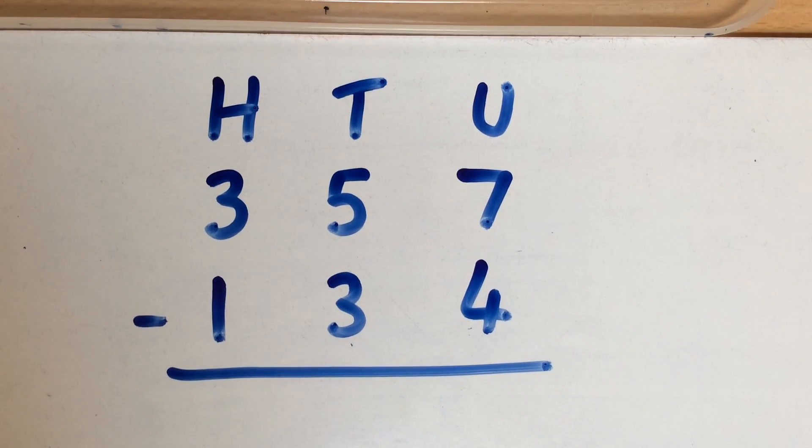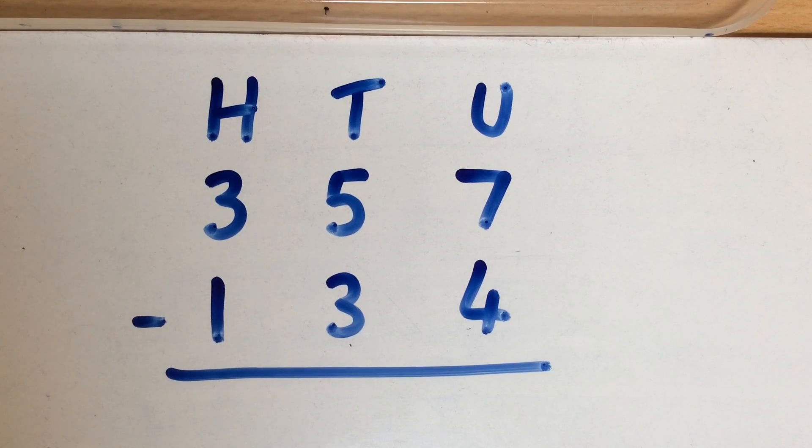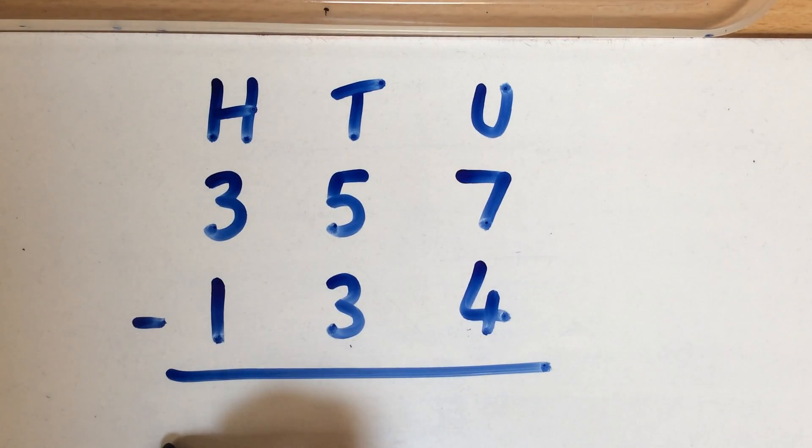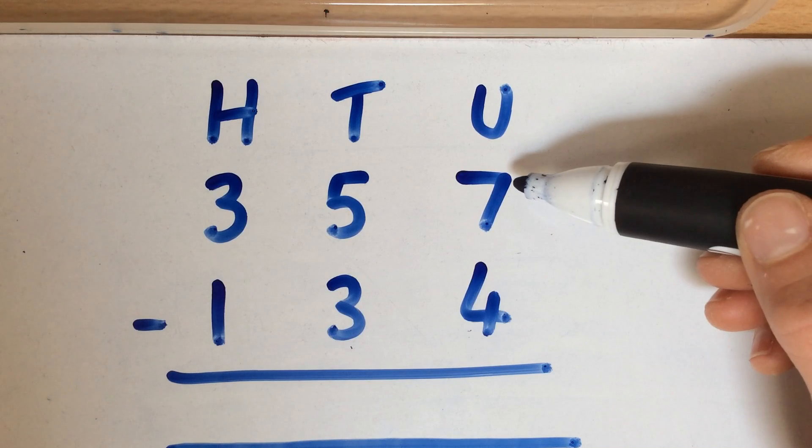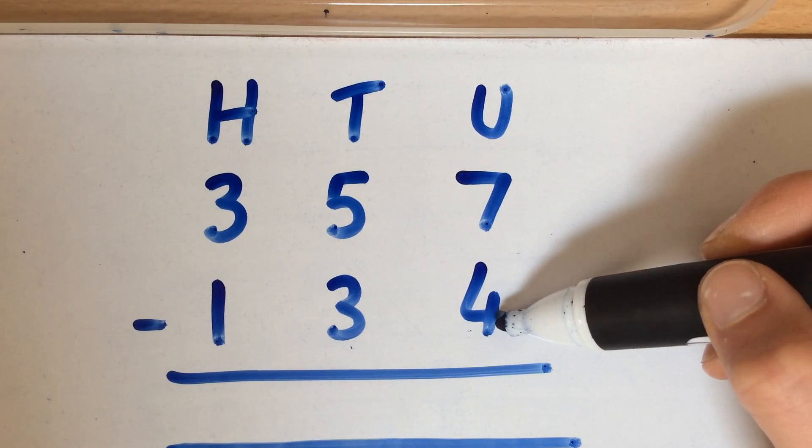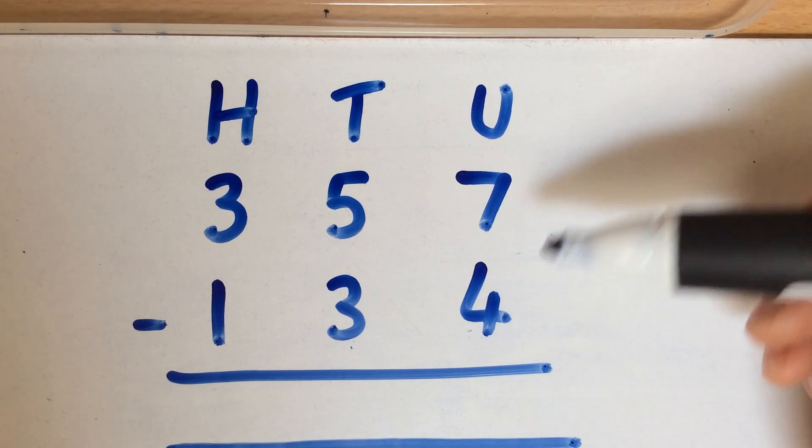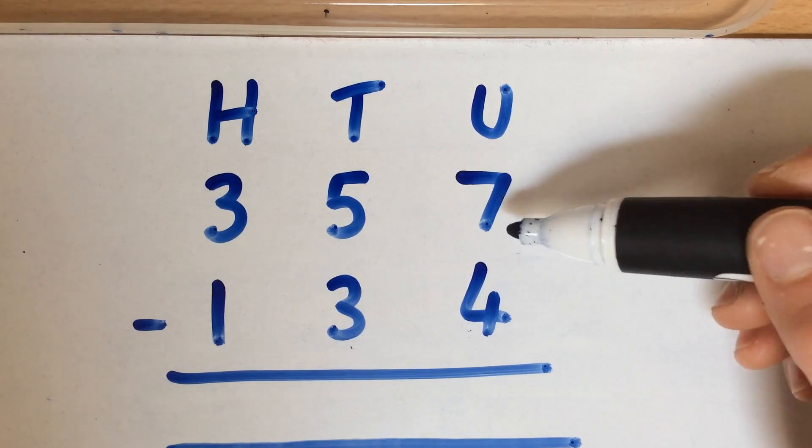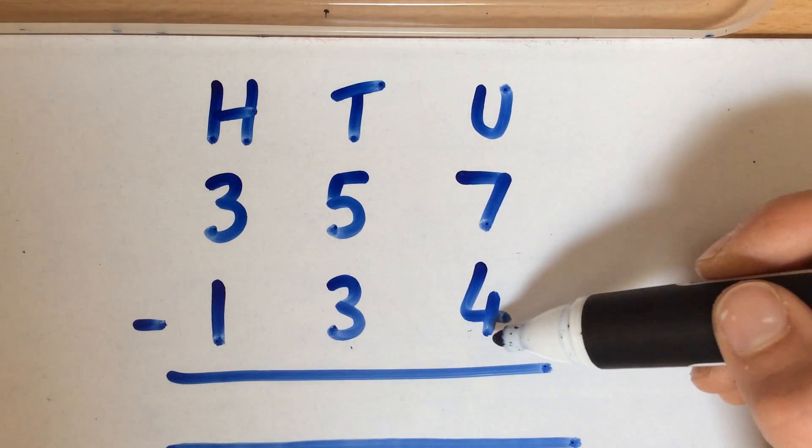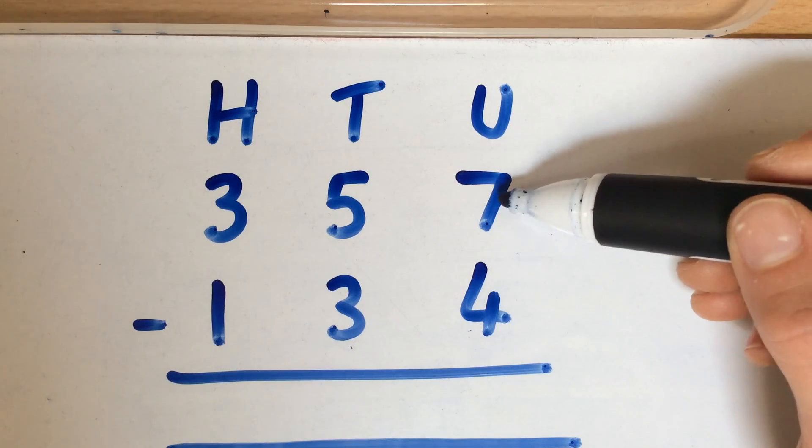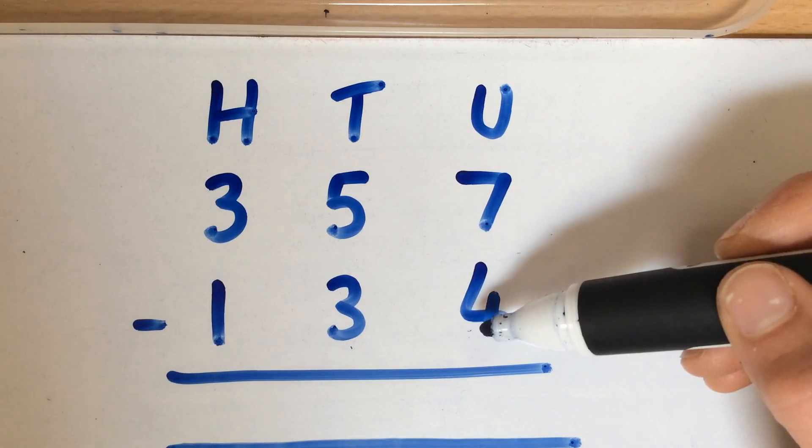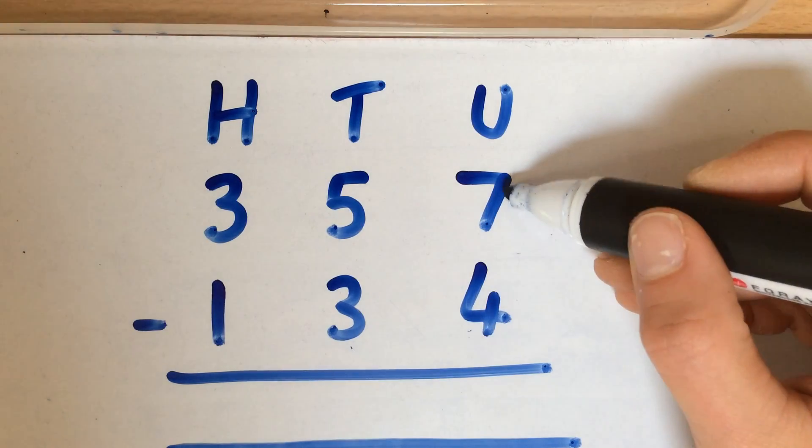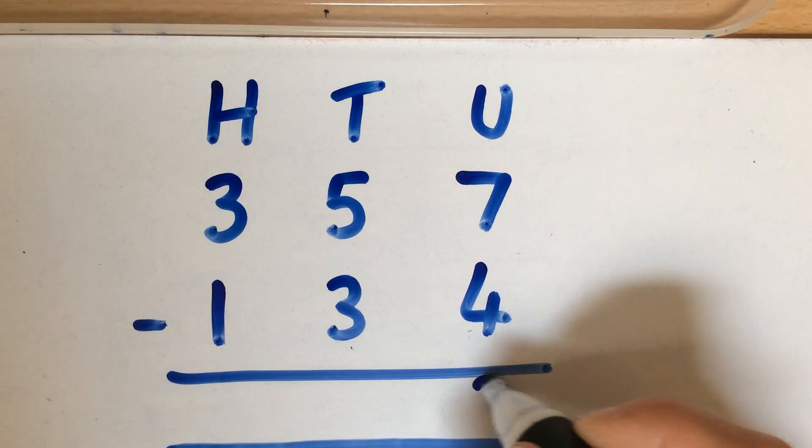Starting with the units, you are going to start from the top and take away the bottom. That's important to re-emphasize because lots of children, when it comes to examples that I'll discuss later, they just like to swap the numbers around. So it's always starting with the top, taking away the bottom. So you've got 7 units take away 4, which gives you 3.